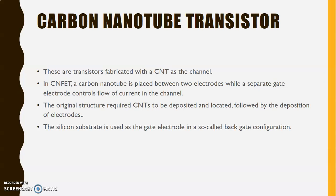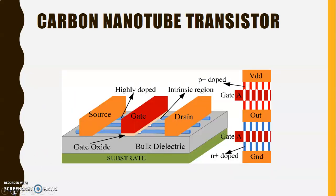The original structure required CNTs to be deposited and located followed by the deposition of electrodes. The silicon substrate is used as the gate electrode in a so-called back gate configuration. This is the basic structure of a carbon nanotube transistor.